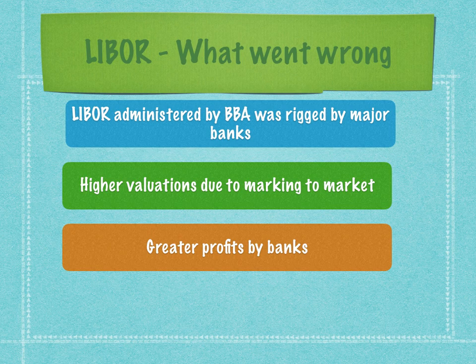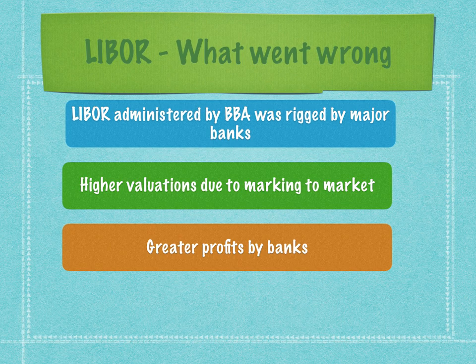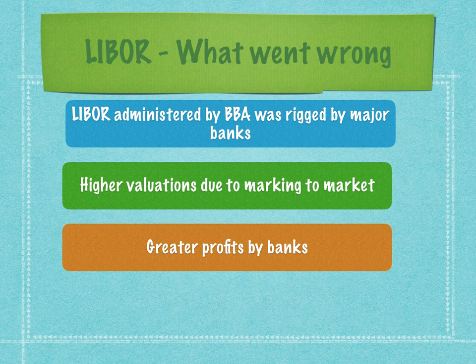Marking to market, also called MTM, is a step that is mandatory for all banks, wherein they value all outstanding market-driven instruments on a daily basis. Since the benchmark LIBOR was rigged lower, valuations came out at higher levels, resulting in great profits for the banks. This led to greater scrutiny by regulators of the UK capital markets, and when they scrutinized the valuation methods adopted by the banks, they found that major banks had rigged the LIBOR.